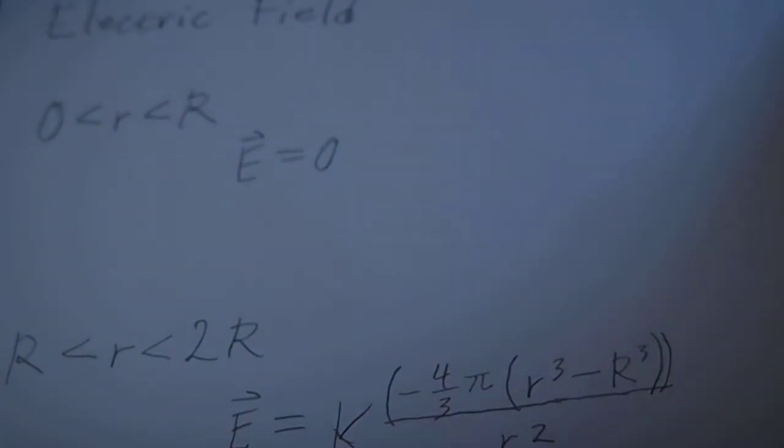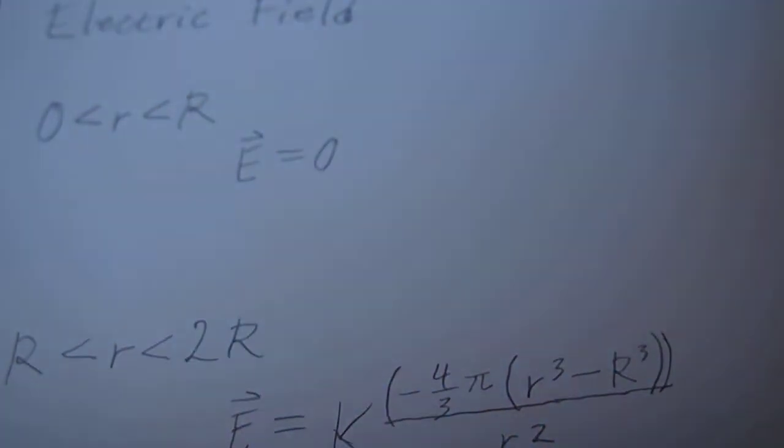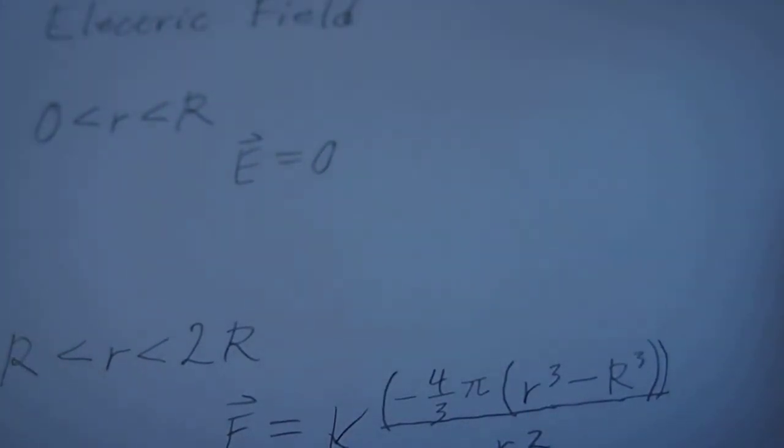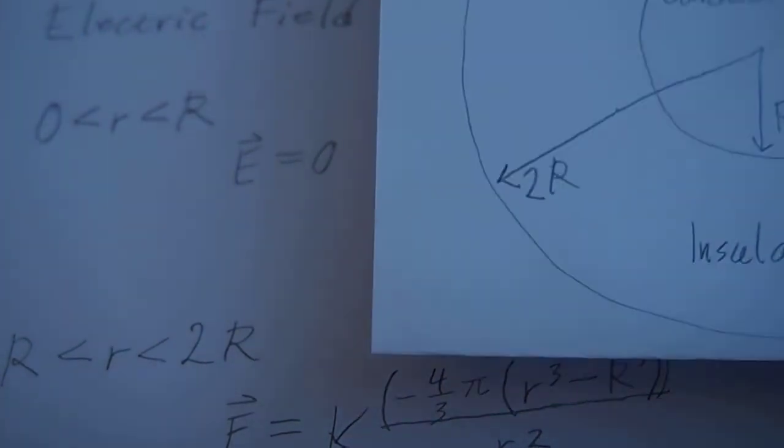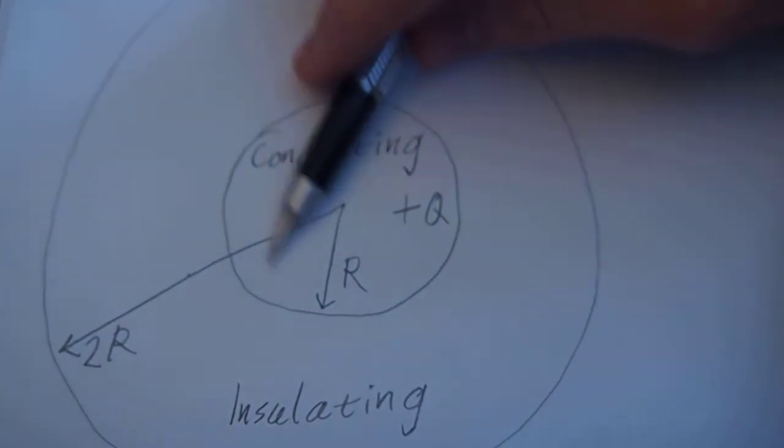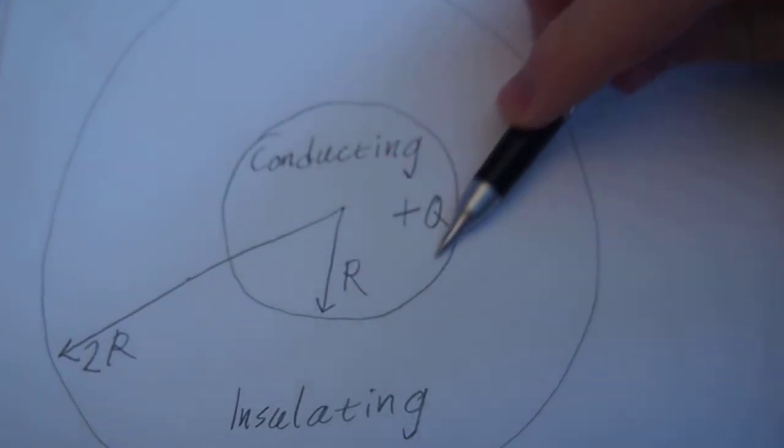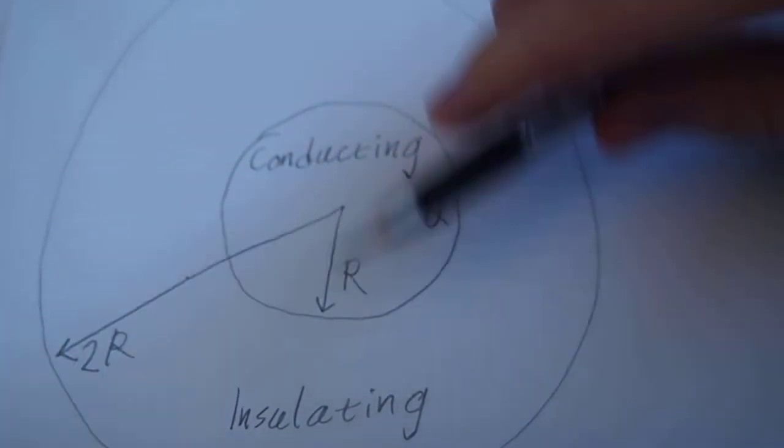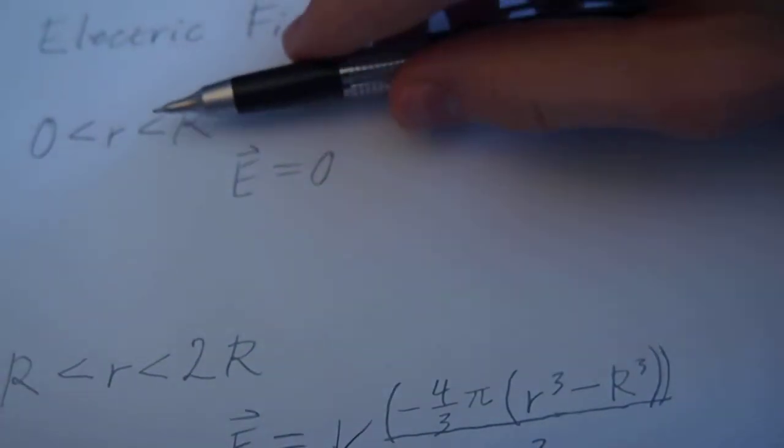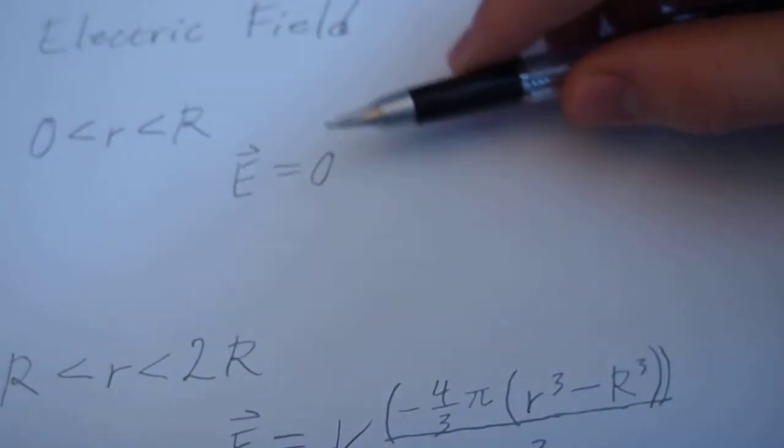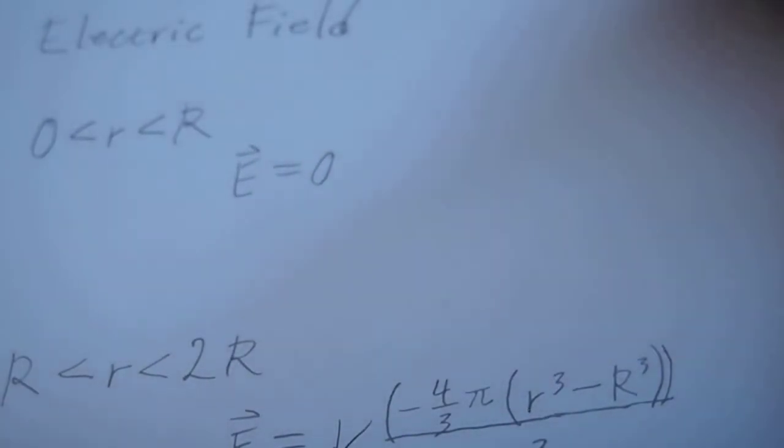So part B, if rho has the value found in part A, find the electric field magnitude and direction in each of the regions. Okay, so our first region is zero is less than R is less than big R. And the electric field in there is zero because this is the region we're talking about. It's a conducting sphere. So the only charge is on the very outside of the sphere, right where it equals R. But we're looking at less than R. So the electric field is zero because there's no charge inside the conducting sphere.